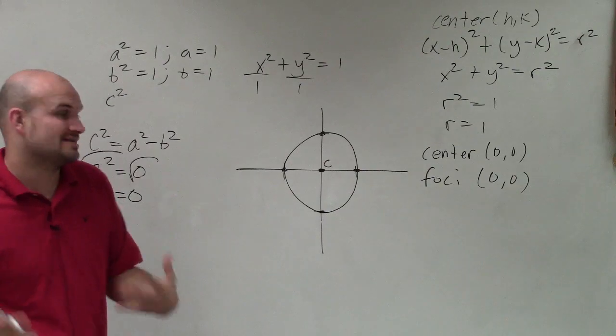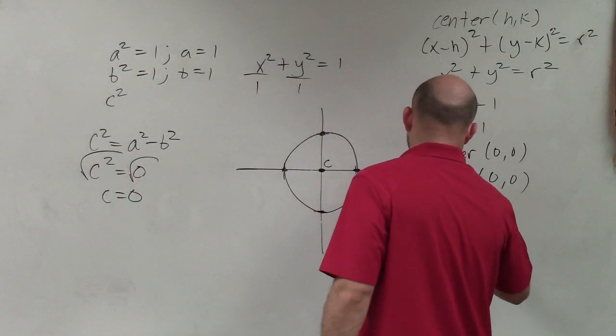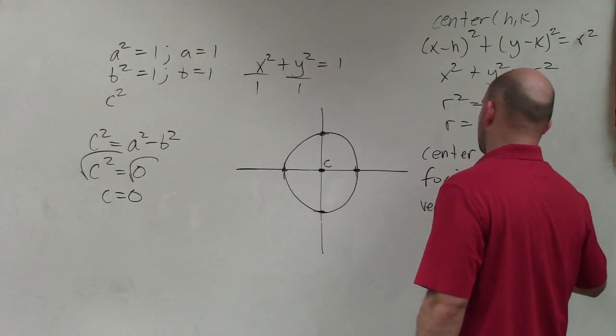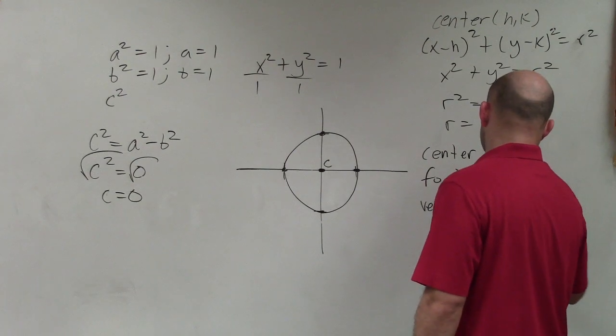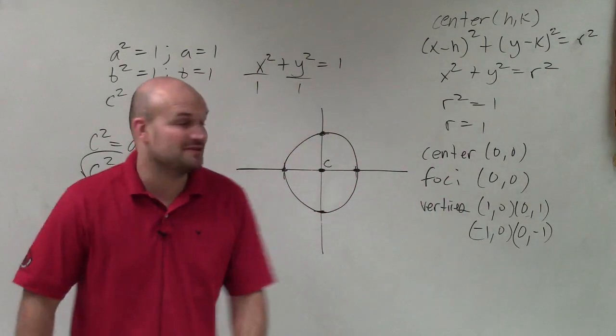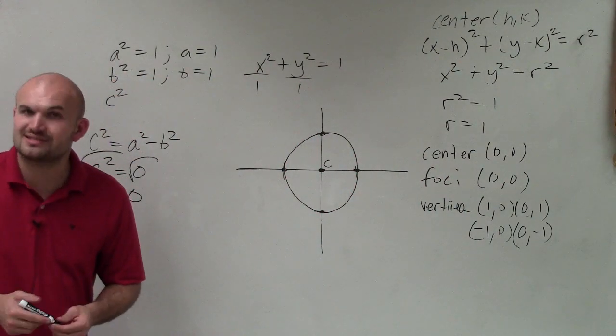Those are just going to be my four points on my circle. So there you go, ladies and gentlemen. That is how you graph the equation of a circle, and also identify the center, the foci, and your vertices. Thanks.